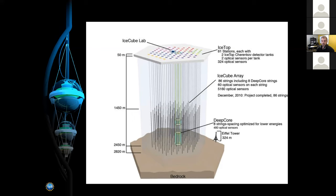The detector consists of 86 cables with optical modules. There are 60 optical modules on each cable, starting at a depth of 1,450 meters and spaced evenly down to a total depth of about 2,450 meters. Roughly speaking, that instruments about one cubic kilometer of ice.